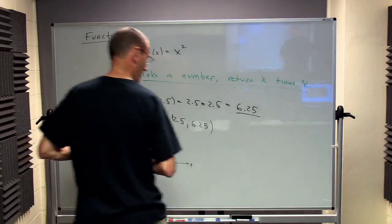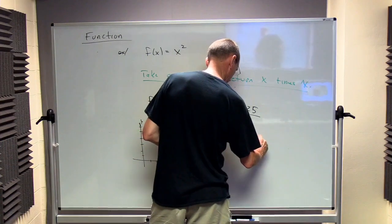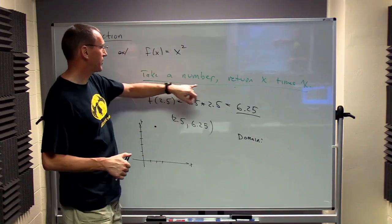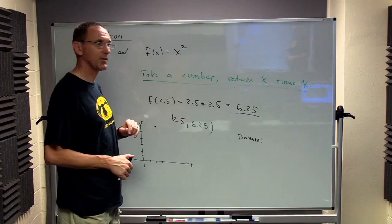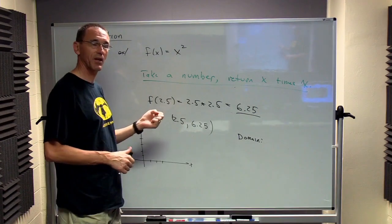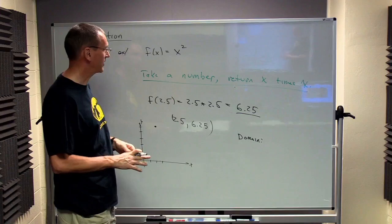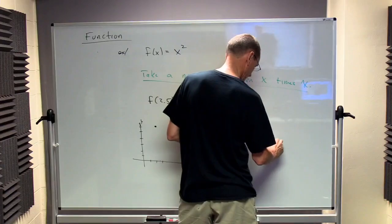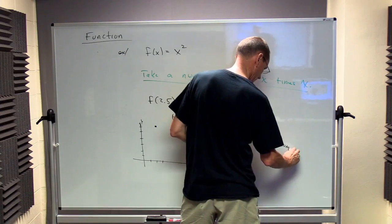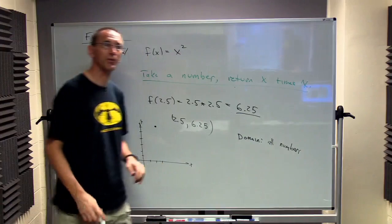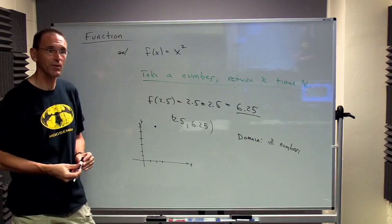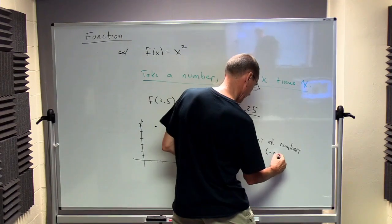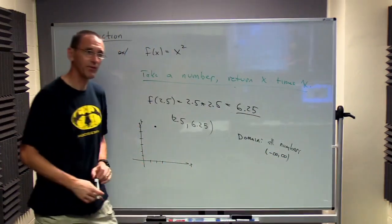Now, in this case, what's the domain? There's no real restriction on what I can do with the numbers here. Basically, if you give me a number, I just multiply it by itself. So there's no kind of restriction that says that given a number, I can't use this rule. So in this case, the domain is all possible numbers. And there's a lot of different ways we can do this. I could just say all possible numbers. I could do it as an interval from minus infinity to infinity.